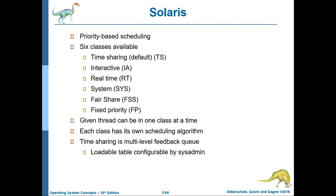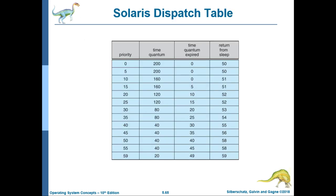Solaris uses priority-based scheduling with six classes: time sharing (default), interactive, real-time, system, fair share, and fixed priority. Each thread belongs to one class at a time, and each class has its own scheduling algorithm. Time sharing uses a multi-level feedback queue with a configurable dispatch table set by the system administrator.